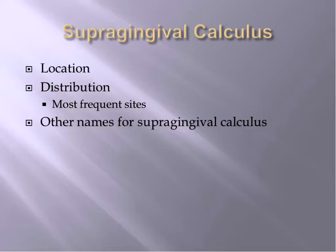Other names for supragingival calculus include supra-marginal, extra-gingival, or coronal calculus, indicating that calculus is on the anatomic crown. There's also salivary calculus, a term indicating that the source of the minerals is the saliva. The terms supragingival and subgingival are the most commonly used, though supra-marginal and sub-marginal are more specific because the gingival margin is the dividing line between the two categories.